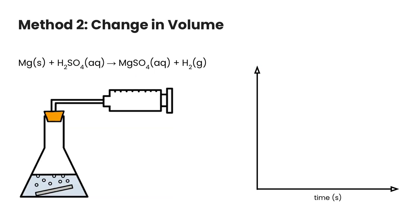The second way is looking at a change in volume. So this is really great if you're producing a gas in a chemical reaction. Pretty much anytime you take a metal and you react it with an acid, you're going to create a salt, but then you're also going to create hydrogen gas.